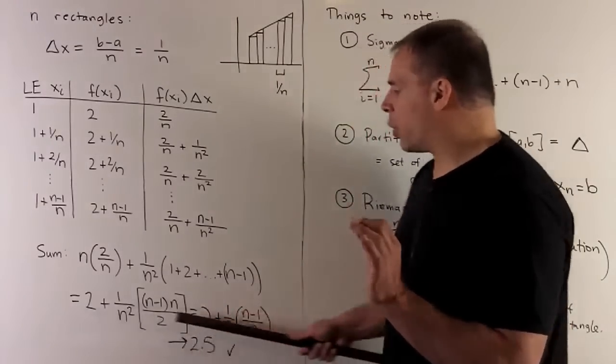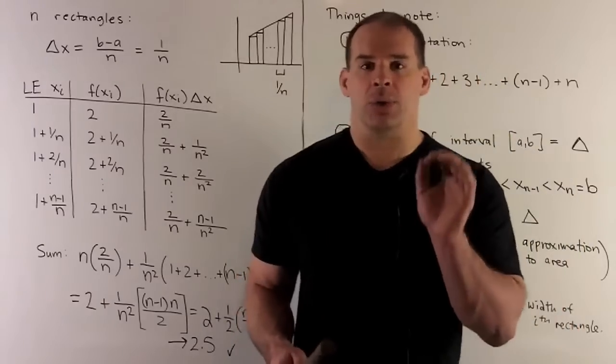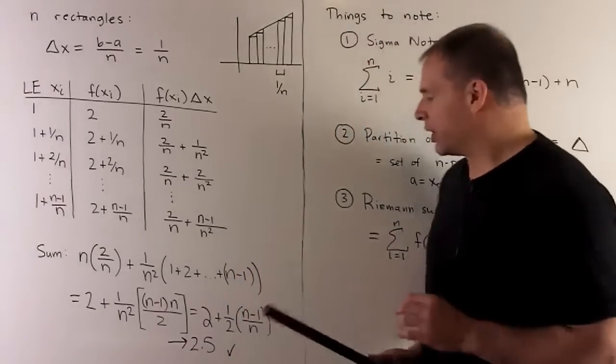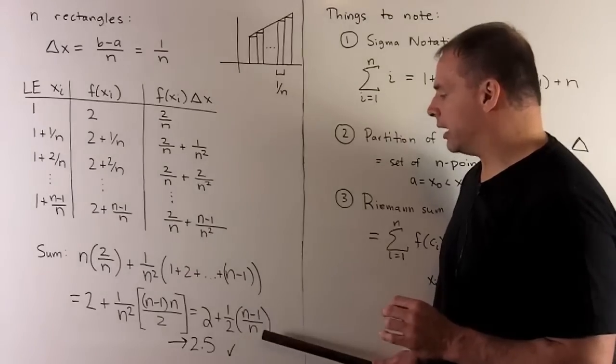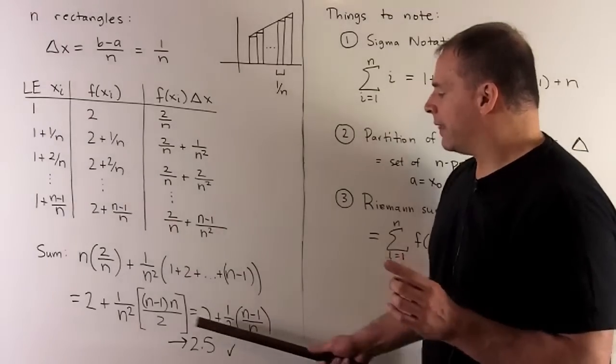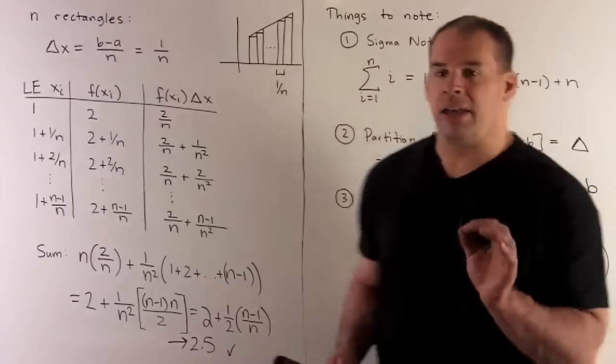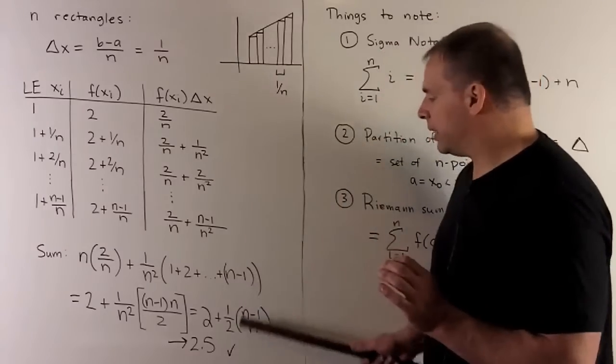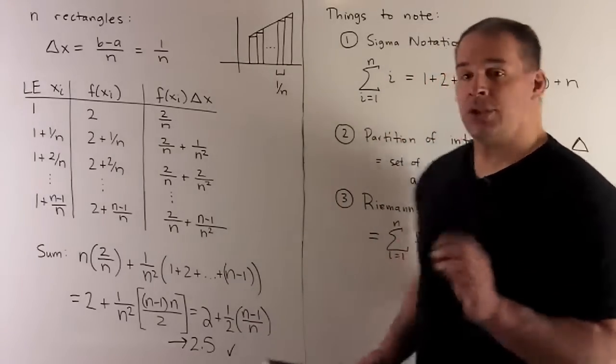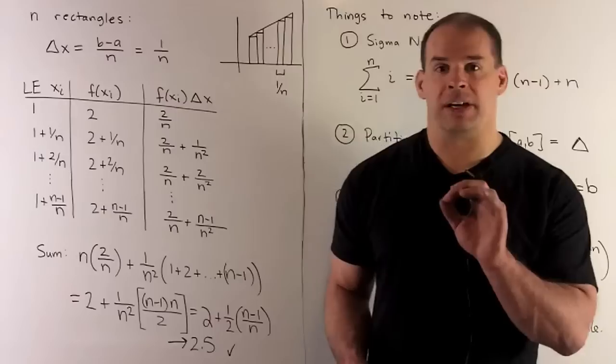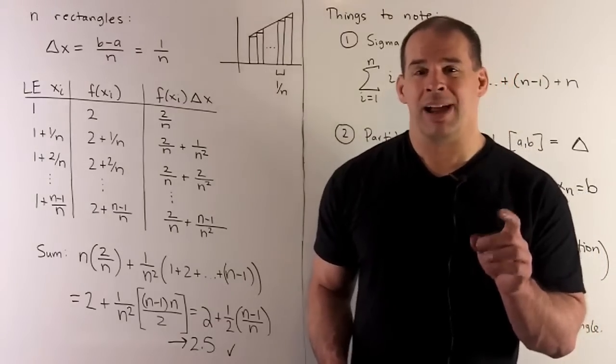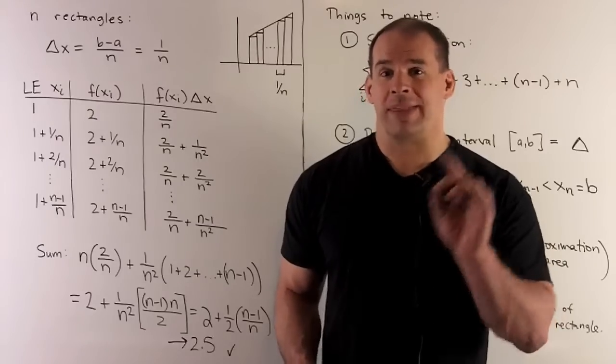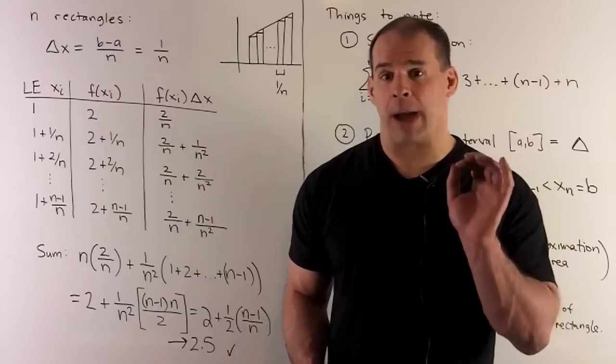So, this gives us the formula for the area when we use n rectangles with equal length base. It's going to give us 2 + (1/2)(n-1)/n. Now, that's not very enlightening, but if we take the limit as n goes to infinity, what happens? This term here is going to go to 1. So, (n-1)/n, as you go to infinity, goes to 1. And that's going to give us an area equal to 2.5, which agrees with the actual area for the trapezoid.